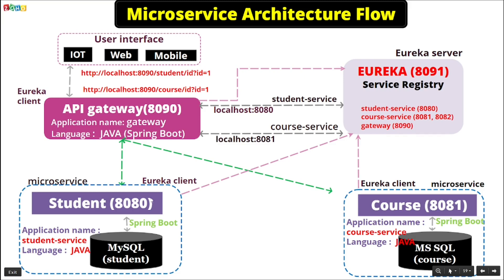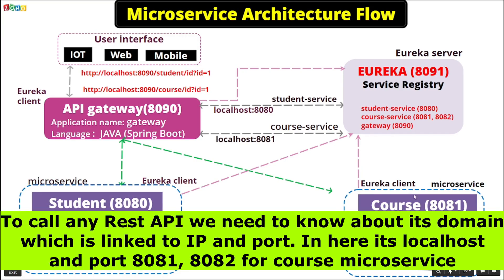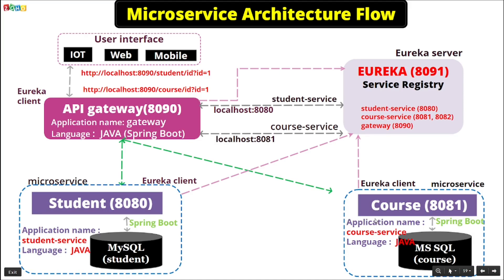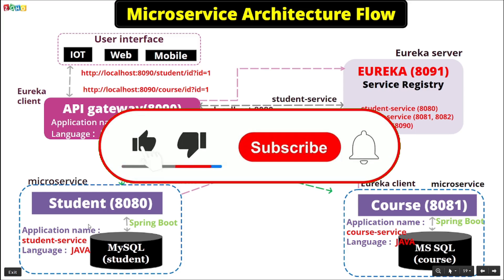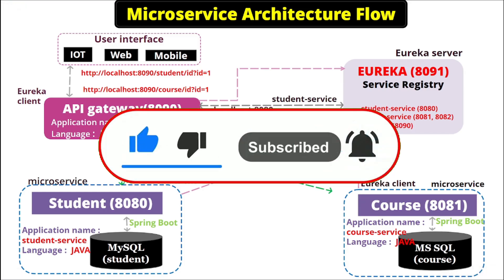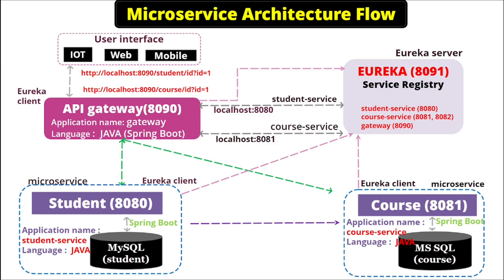The user interface calls the student API, the API Gateway calls the student microservice, and then the student microservice calls the course microservice — this is what we call a service-to-service call. To call one service API from another, we need to configure the URL for that microservice, and the URL must include the IP and port where it is running. However, in microservices there could be multiple instances of the same course microservice deployed on multiple servers and multiple ports, making it very difficult to manage all those IPs and ports.